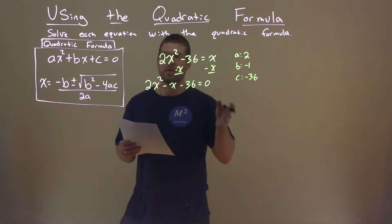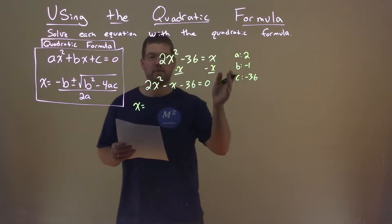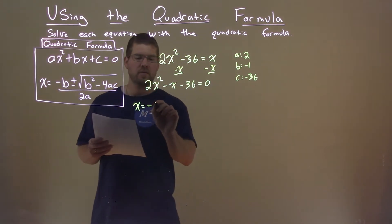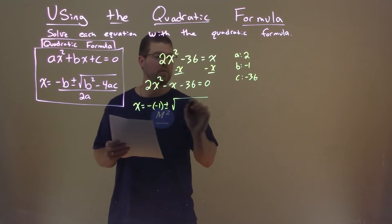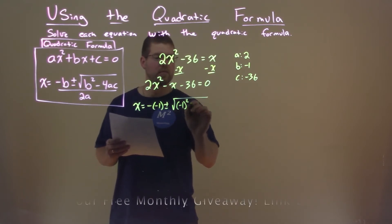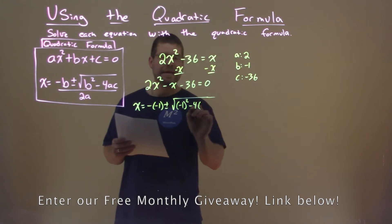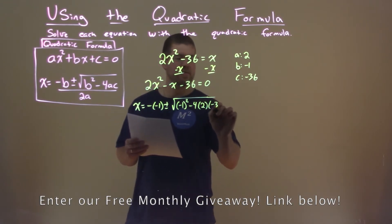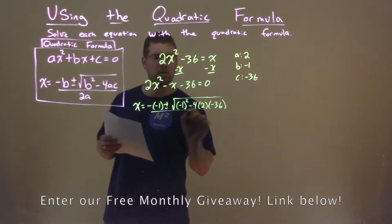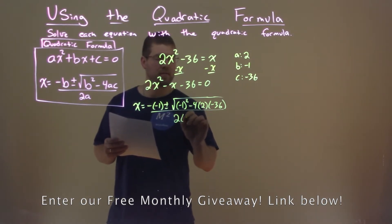So now with that, we can use the quadratic formula and plug in our values and solve. So negative b, so negative negative one, plus or minus the square root, b squared, negative one squared, minus four, a, which is two, times c, which is negative 36, all over two times a, which is two.